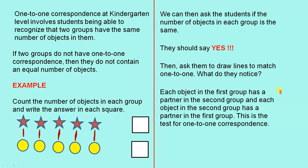Each object in the first group has a partner in the second group, and each object in the second group has a partner in the first group. This is the test for one-to-one correspondence.